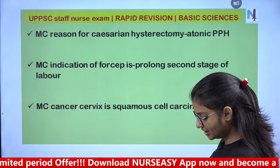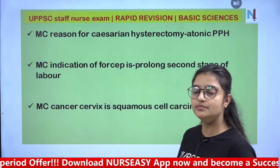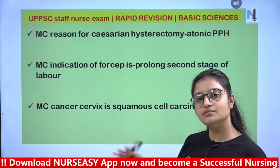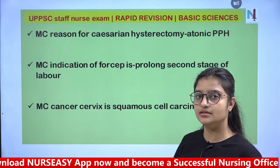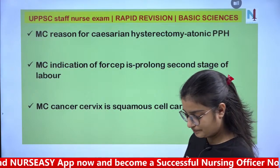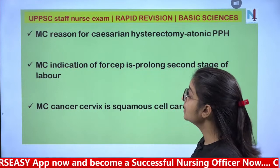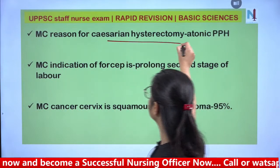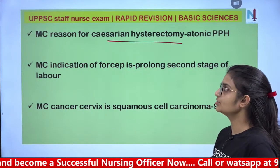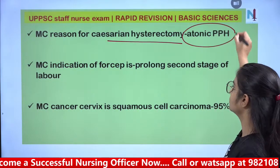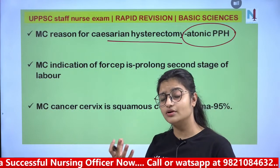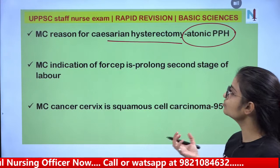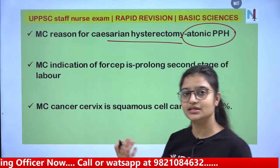PPH is defined as more than 500 ml blood loss in vaginal delivery and more than 1000 ml in caesarean section. The most common reason for caesarean hysterectomy is atonic PPH — when the uterus cannot contract and the mother is bleeding, the uterus may need to be removed.